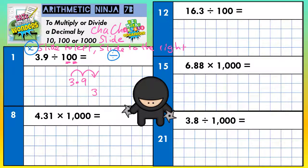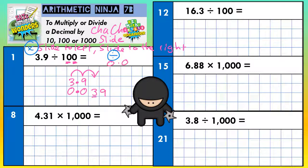Our decimal point doesn't move, so the decimal point is going to stay there. Now, if the 3 has moved two places to the right, and it goes 3, 9 in the question, it's going to go 3, 9 in the answer — so the 9 is going to be just after it. Both the 3 and the 9 have moved two places to the right, and we've got two empty gaps around the decimal point — we just need to fill those in with zeros. Final answer to the first one: 0.039.